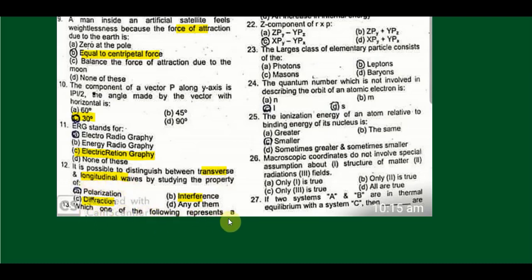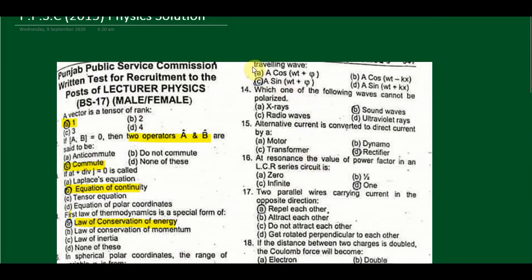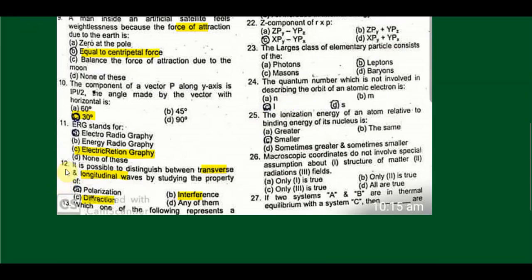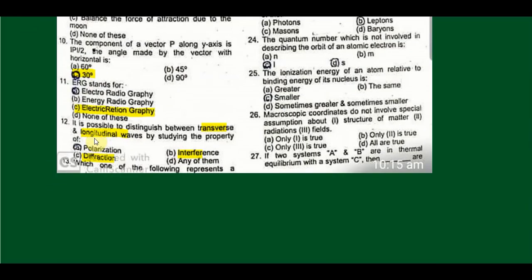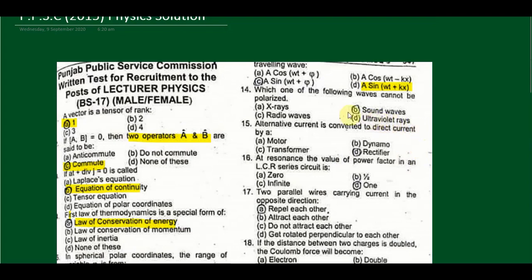Which one of the following represents a traveling wave? This option will be A sin(ωt + kx), and this represents a traveling wave in the negative direction. The following waves cannot be polarized: again, we discussed this question here. An example of longitudinal waves is sound waves. Among these waves you cannot polarize sound waves. Electromagnetic waves can be polarized.